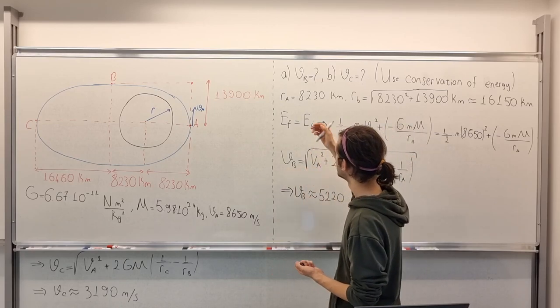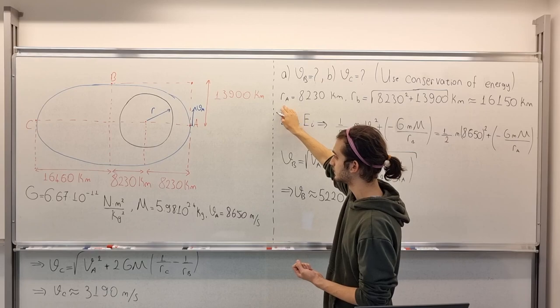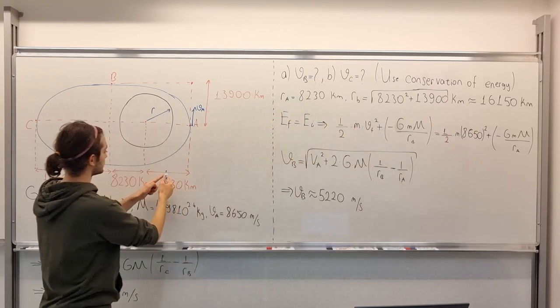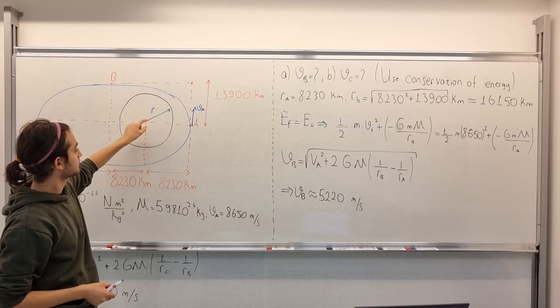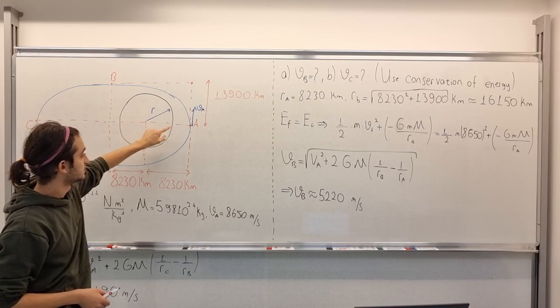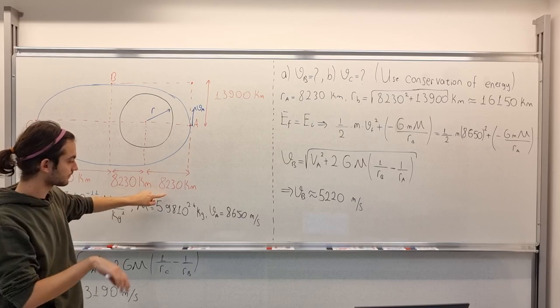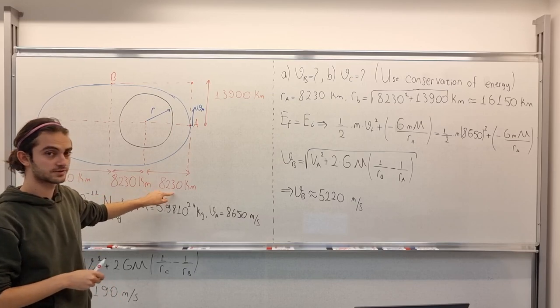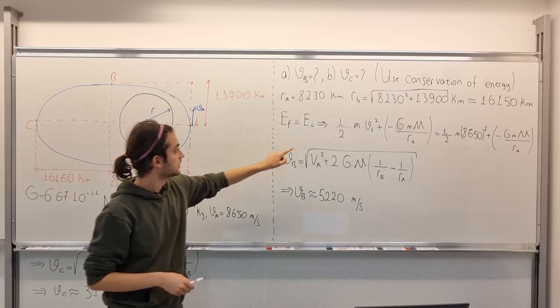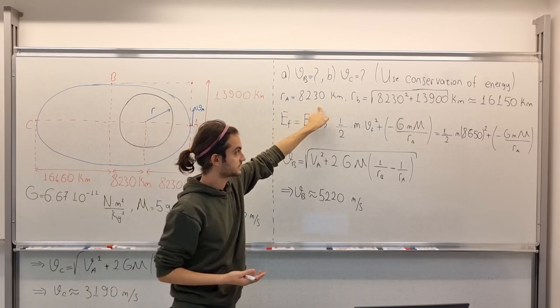We have RA, this distance from the center of Earth to point A, and it's 8,230 kilometers, which is, as I can write, is that.